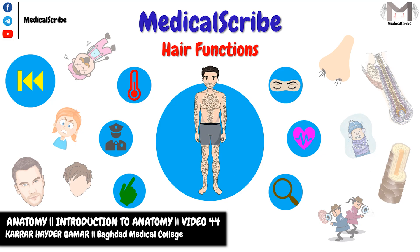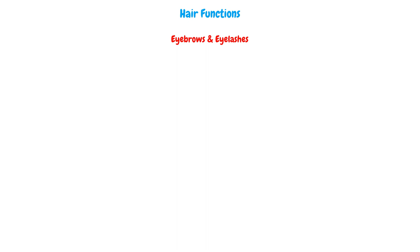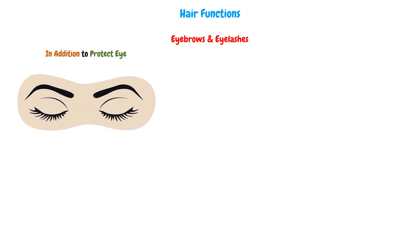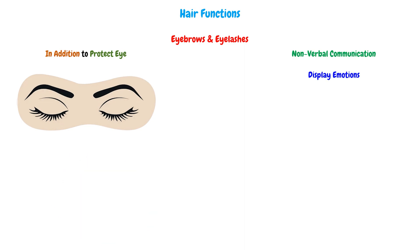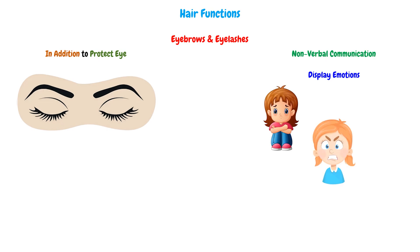Lastly, regarding the hair functions, and in specific, the eyebrows and the eyelashes, they have an important function which is, in addition to their function to protect the eye from dust and foreign materials, they will play a key role in non-verbal communication. So we can display our emotions, like if we are sad, or if we are angry, or surprised, and other emotions, which is a very important thing in social communication.